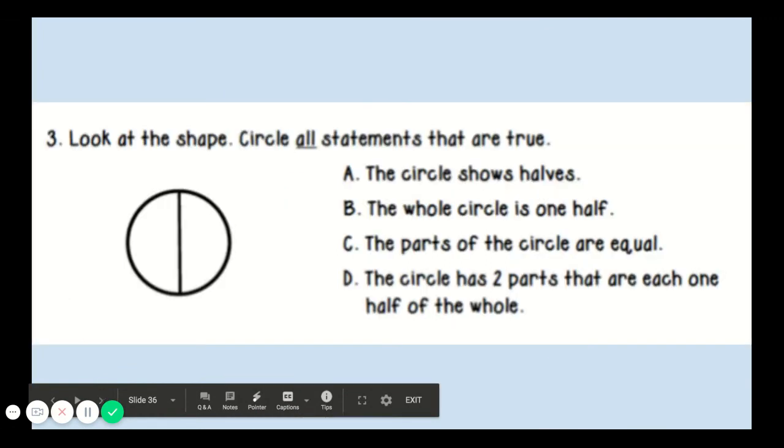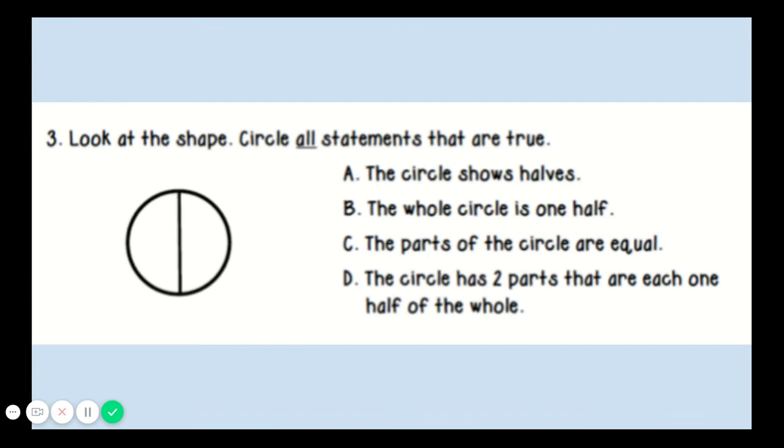This is an example of one of the practice problems from your week seven packet. It says, look at the shape, circle all statements that are true. A, the circle shows halves. B, the whole circle is one half. C, the parts of the circle are equal. D, the circle has two parts that are each one half of the whole.